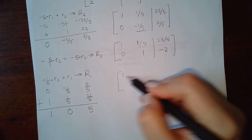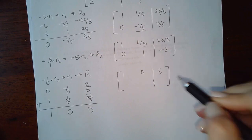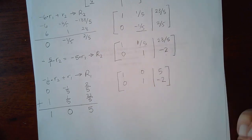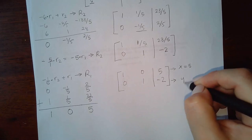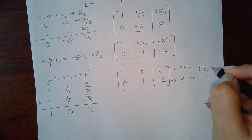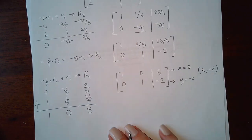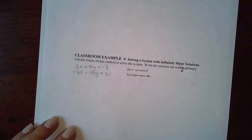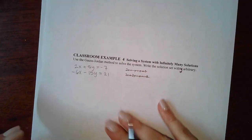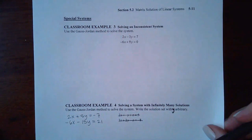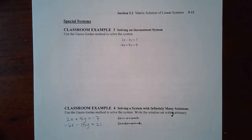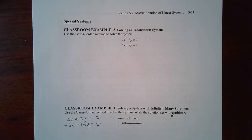So row 1 is [1, 0 | 5] and row 2 stays [0, 1 | -2]. Converting back: x = 5 and y = -2, or in point form (5, -2). We've taken about 10 minutes. I'm going to cut the video here and talk about special cases in the next video, then we'll tackle a word problem.